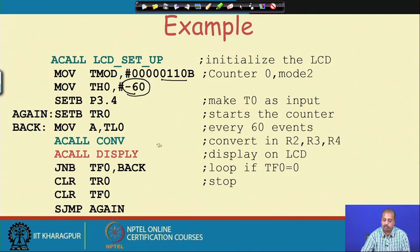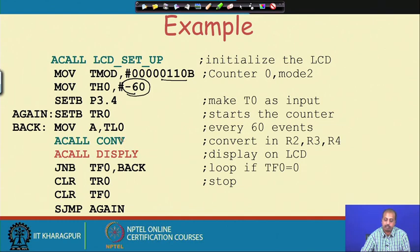We move TL0 to A, then call the convert routine, which converts the value into registers R2, R3, R4 — those hold the hour, minute, and second parts of the display. Then we check TF0: if TF0 has overflowed we go back, meaning one loop is over and TL0 will be reloaded. If the overflow bit is set, TR0 is stopped, the overflow flag is reset, and the timer is started again. That is the program for this purpose.